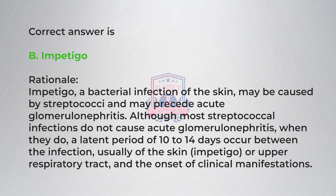Rationale: Impetigo, a bacterial infection of the skin, may be caused by streptococci and may precede acute glomerulonephritis. Although most streptococcal infections do not cause acute glomerulonephritis, when they do, a latent period of 10 to 14 days occurs between the infection — usually of the skin (impetigo) or upper respiratory tract — and the onset of clinical manifestations.